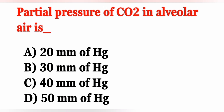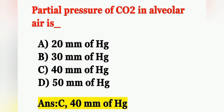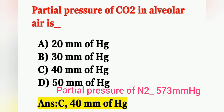Next question: Partial pressure of carbon dioxide in alveolar air is — Option A: 20 mmHg, Option B: 30 mmHg, Option C: 40 mmHg, Option D: 50 mmHg. The partial pressure of carbon dioxide in alveolar air is about 40 mmHg. Option C is the correct answer. For reference, partial pressure of nitrogen in alveolar air is about 573 mmHg.